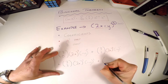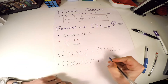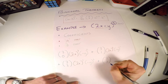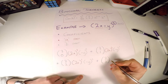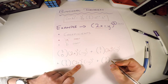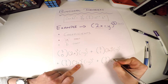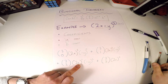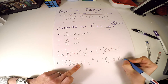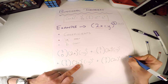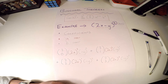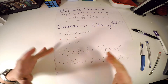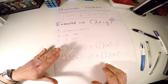I have only one more term because I had to keep bringing the bottom number up until it matches the top, so now I have 3 choose 3. My a-part 2x keeps going down to the power of zero, and my minus y has now moved up to the power of three. So that's all my terms set out — now I have to simplify.